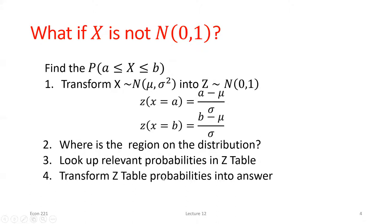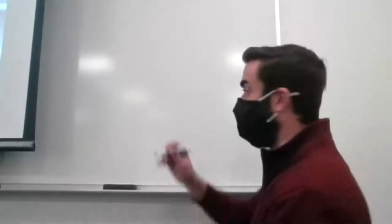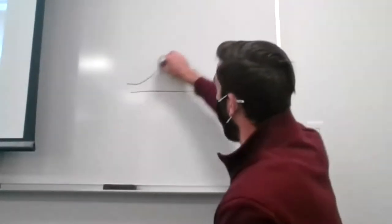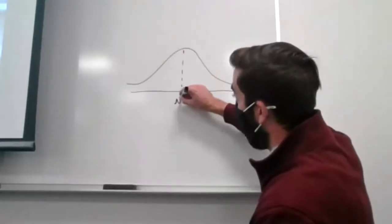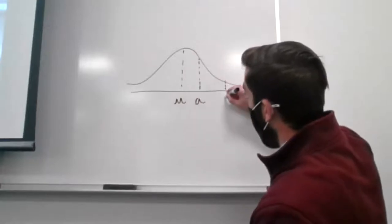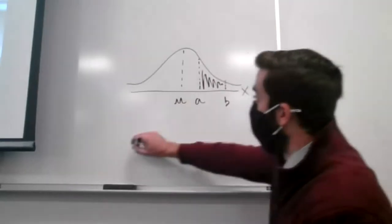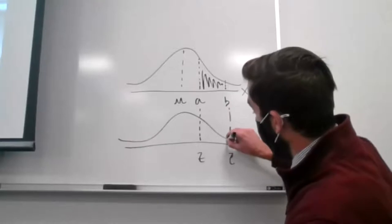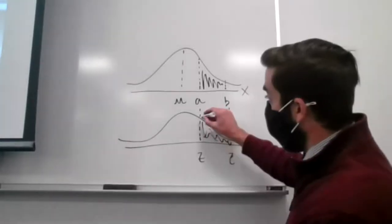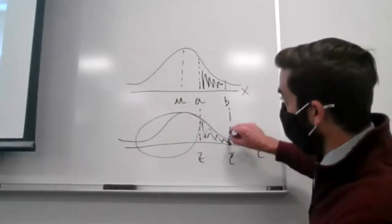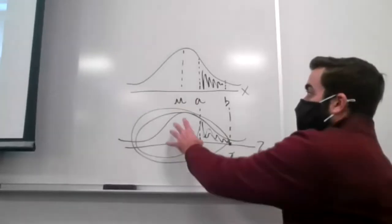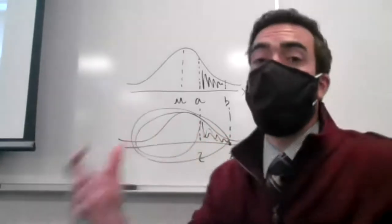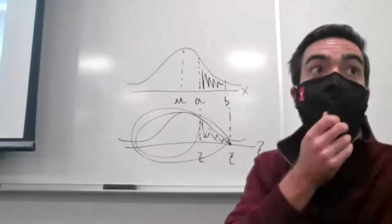The fourth and final step — sometimes we don't need to do anything extra, sometimes we do — is using those probabilities to answer what we originally wanted. Visually, looking up a z-score gives the area to the left of it. So to find the area between two z-scores, we subtract the smaller area from the larger area, and we're left with just what's in between. That subtraction of the two probabilities is what that last step represents.